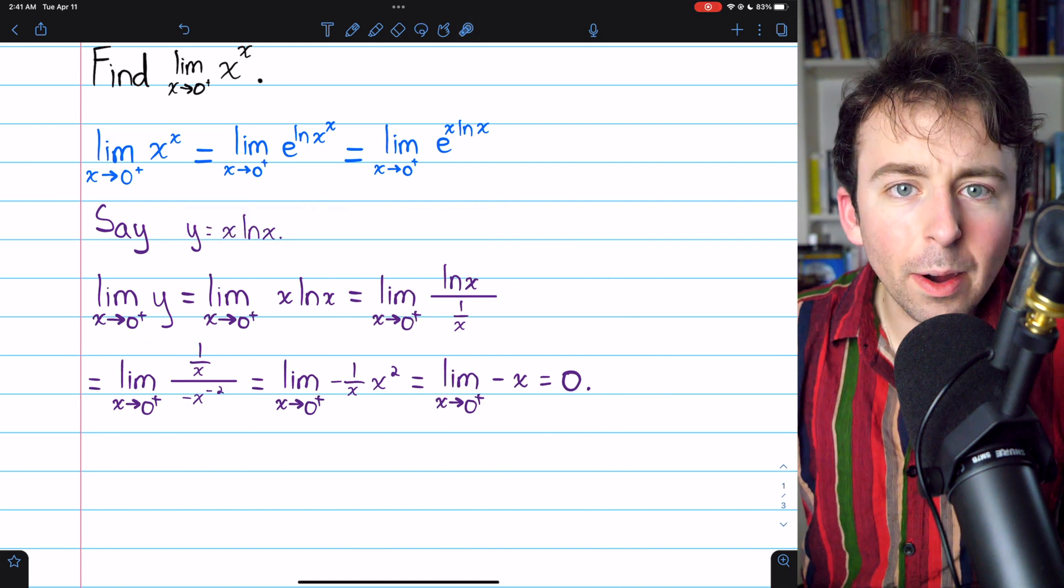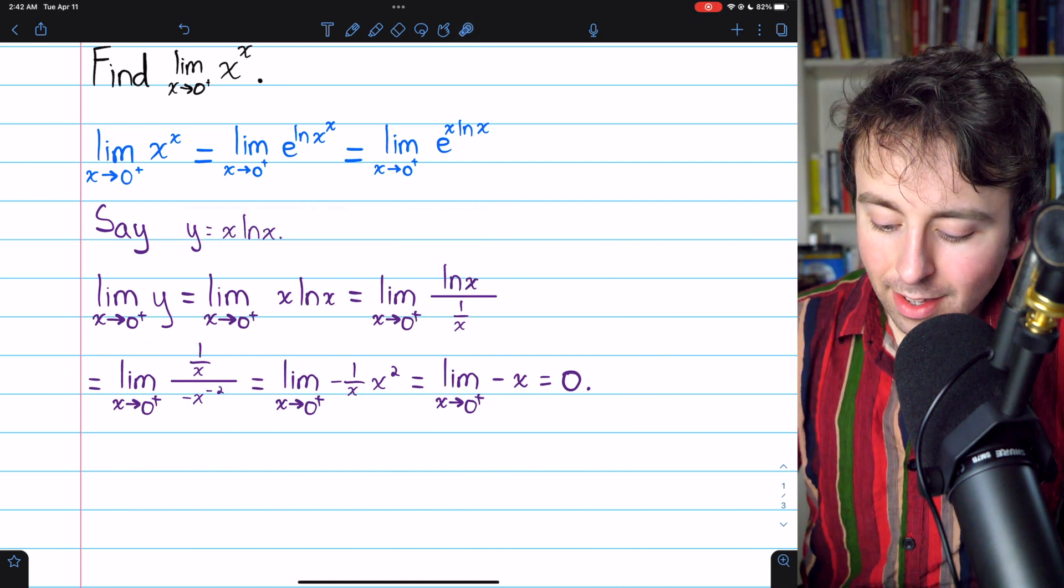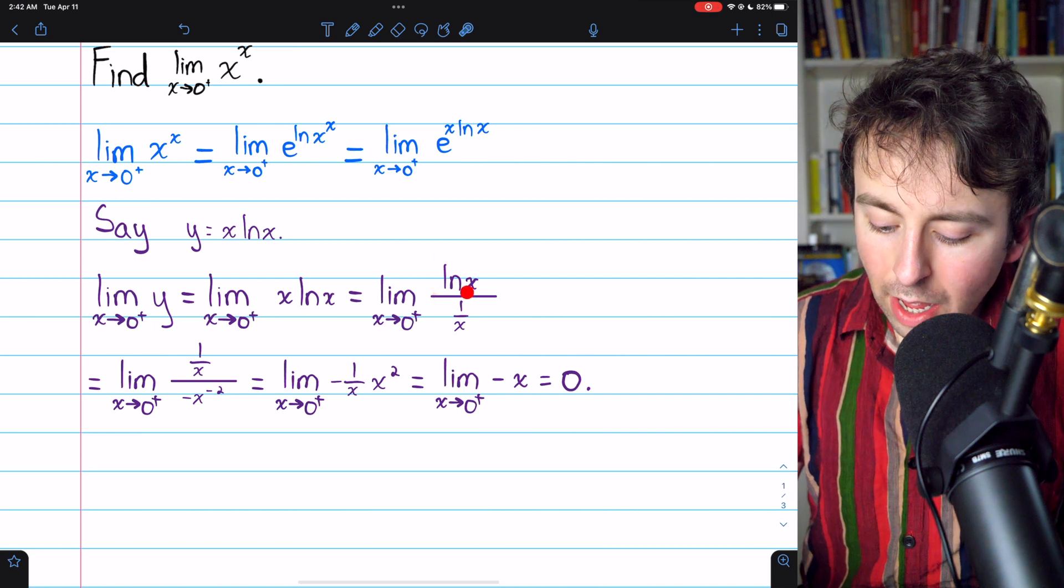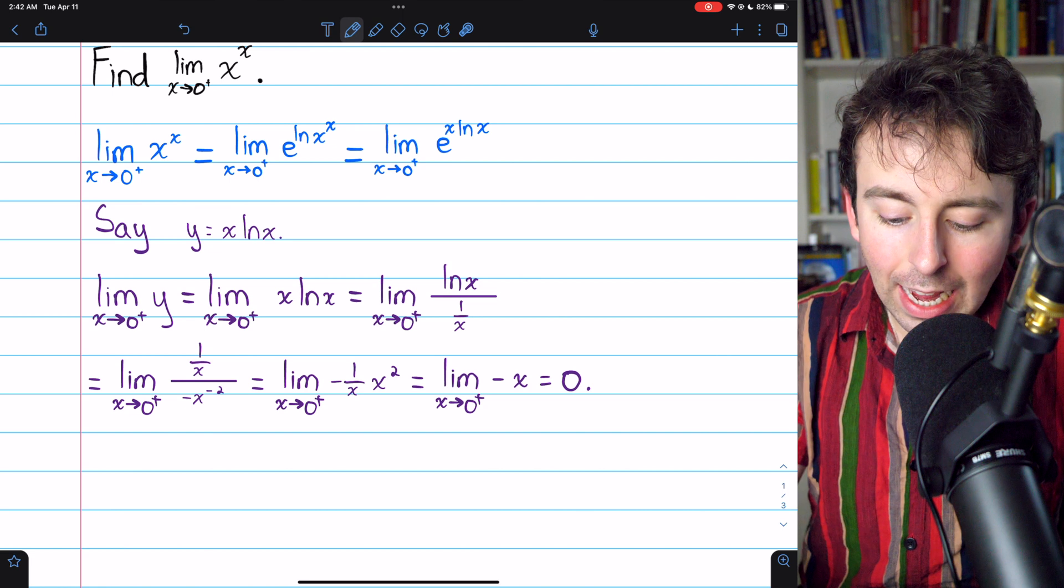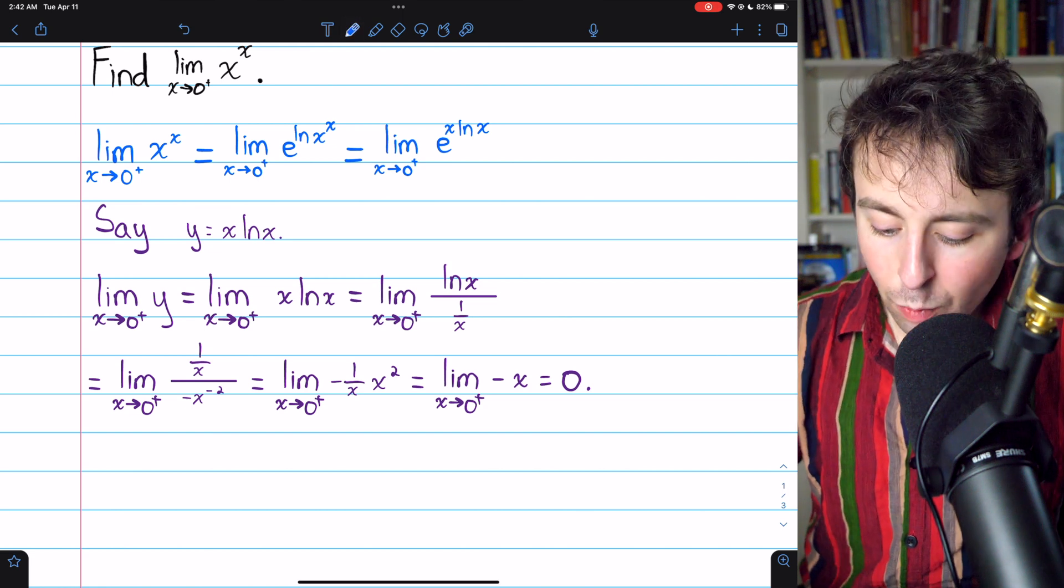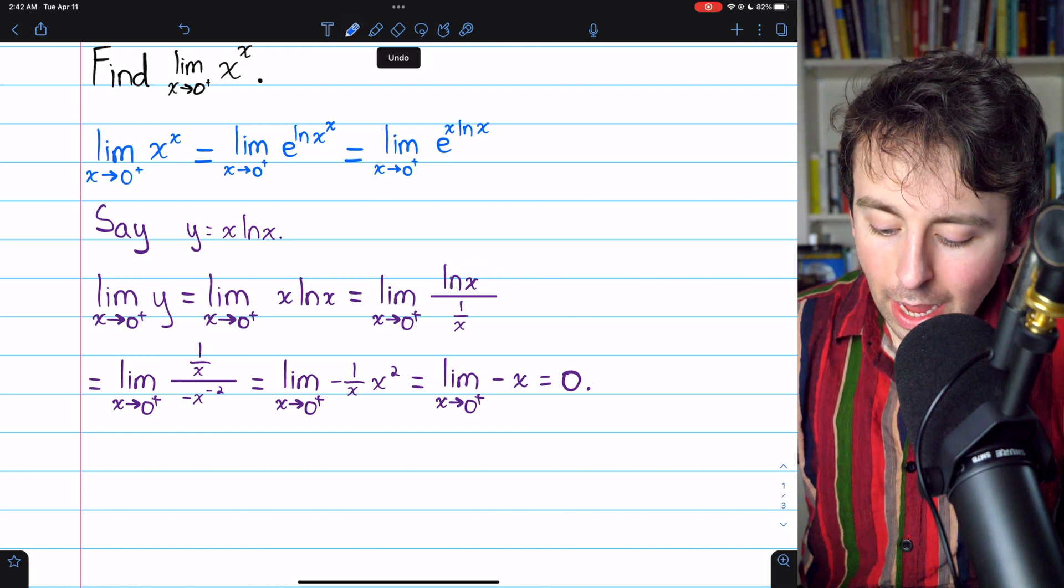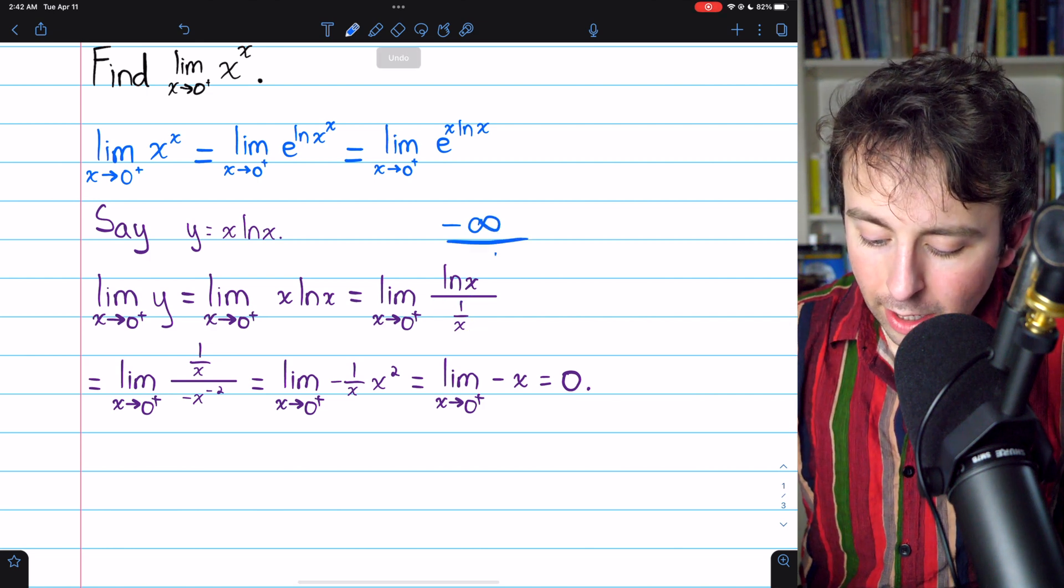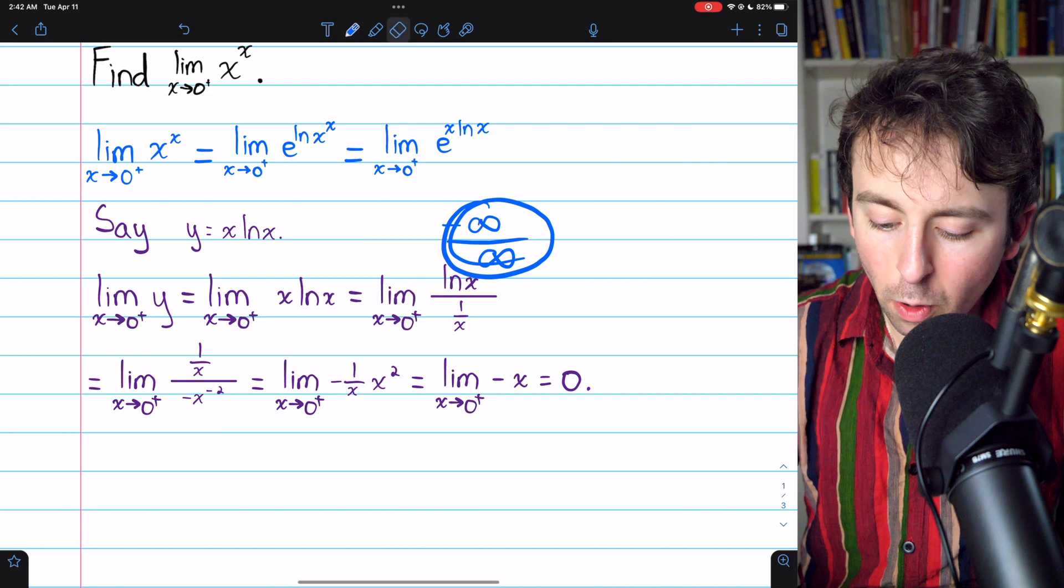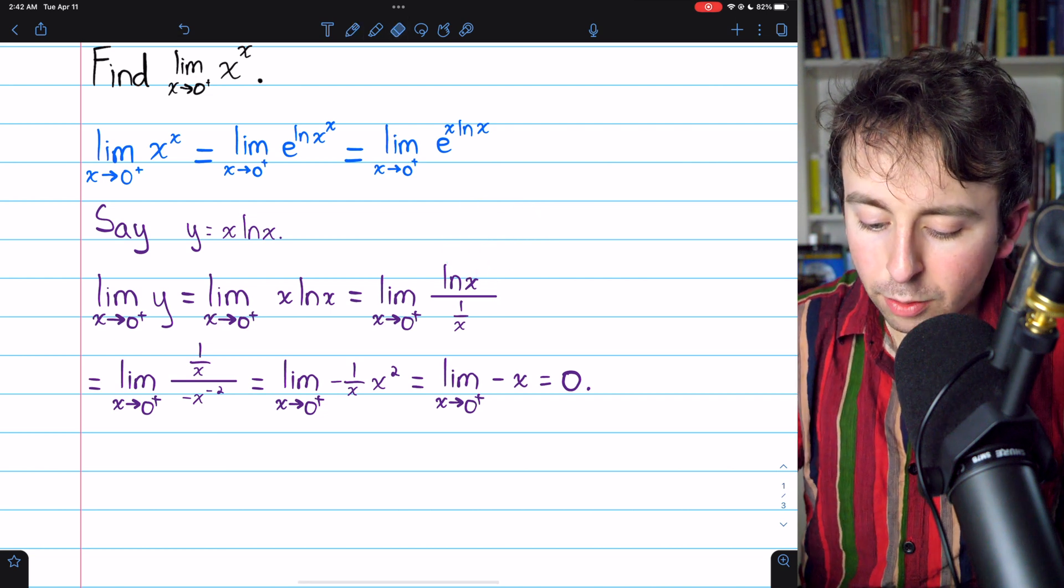And here we see how that works out. So, x ln x is the same as ln x divided by 1 over x, and this is in an indeterminate form. If we plug 0 in here, well, ln of 0 is going to negative infinity, and 1 over 0 is infinity. So, this is an indeterminate form, and we can apply L'Hôpital's rule.